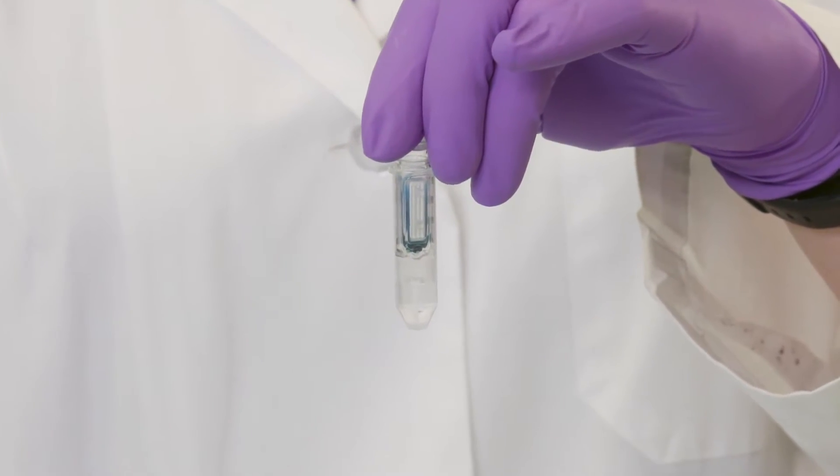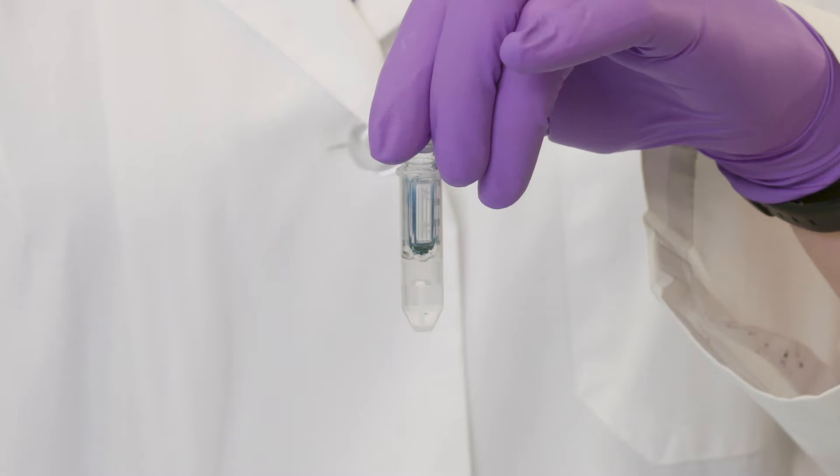To get every last microliter of sample back out of the device and into your collection tube without using a pipette, you could use reverse spin.